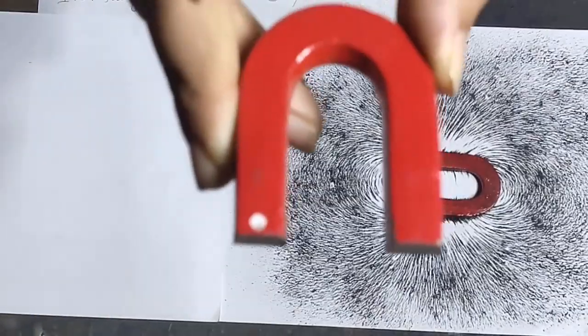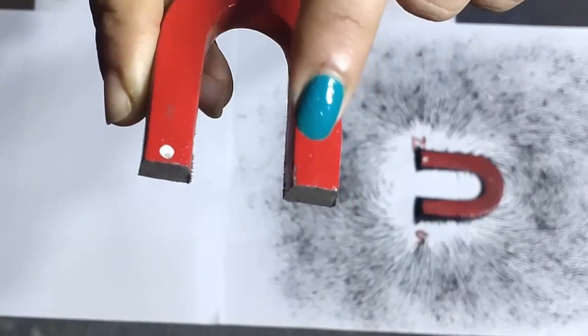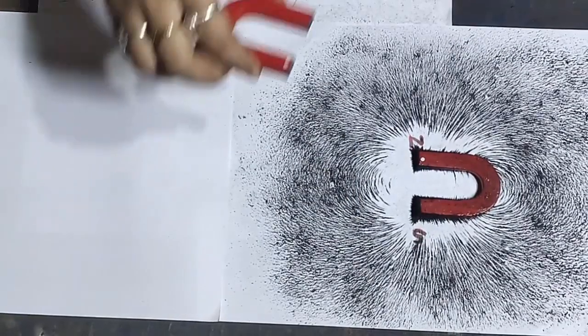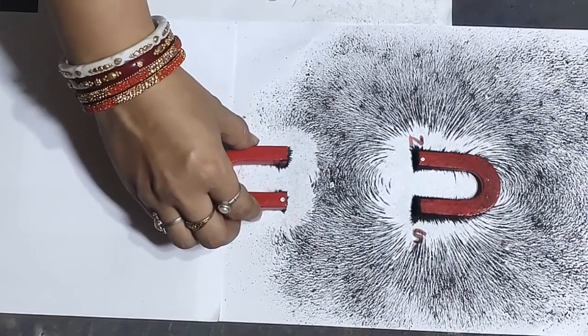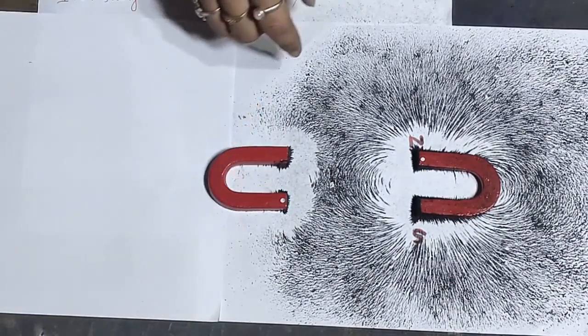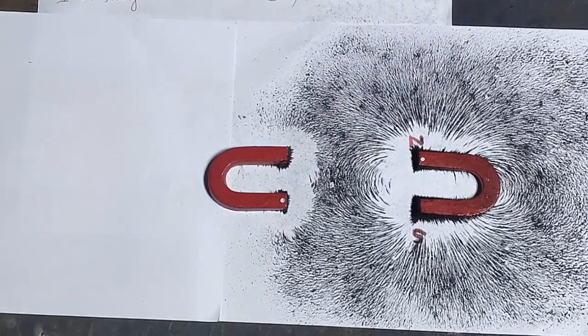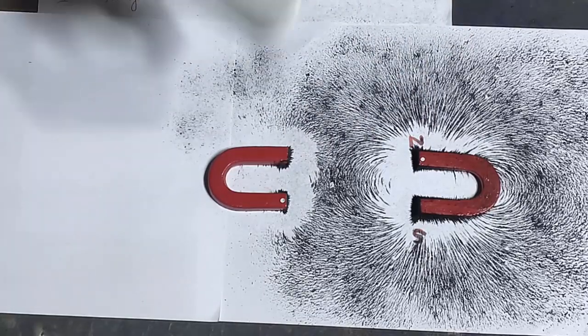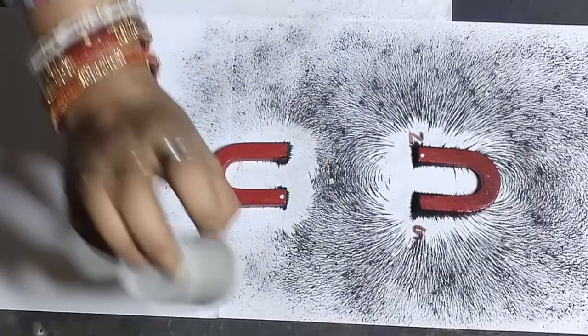Now I have another horseshoe magnet, this is North Pole and this is the South Pole. Now I am placing the second magnet near the first one. Note that the North poles are diagonally opposite to each other. Again I am sprinkling the fine iron filings around the second magnet to see the pattern of the lines of force.